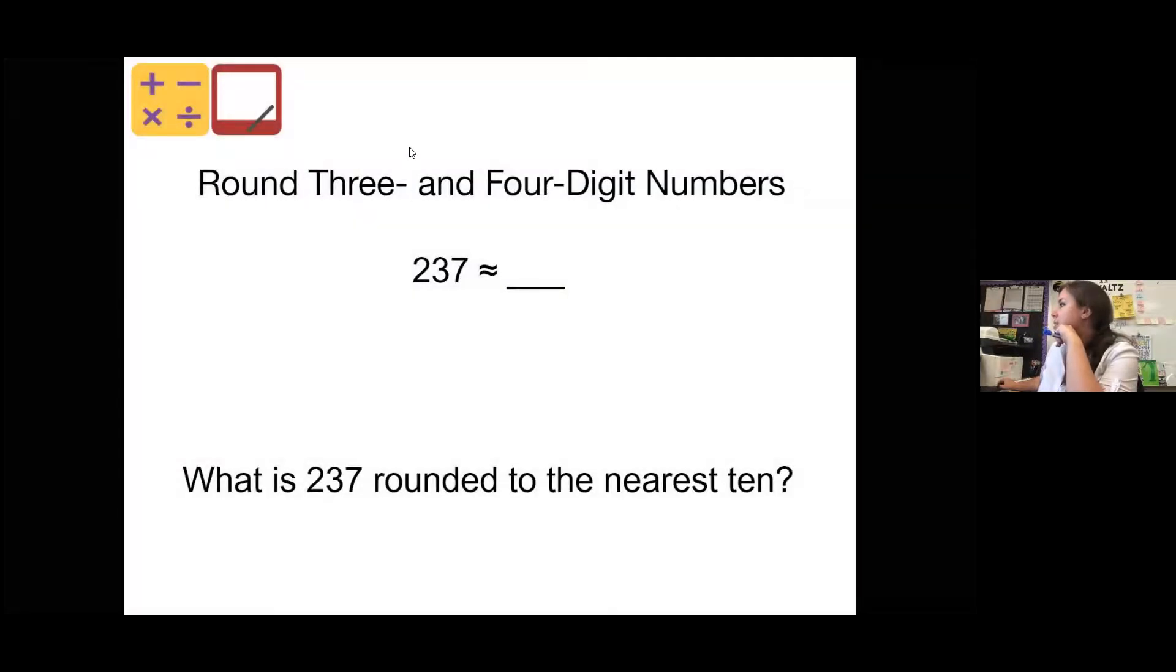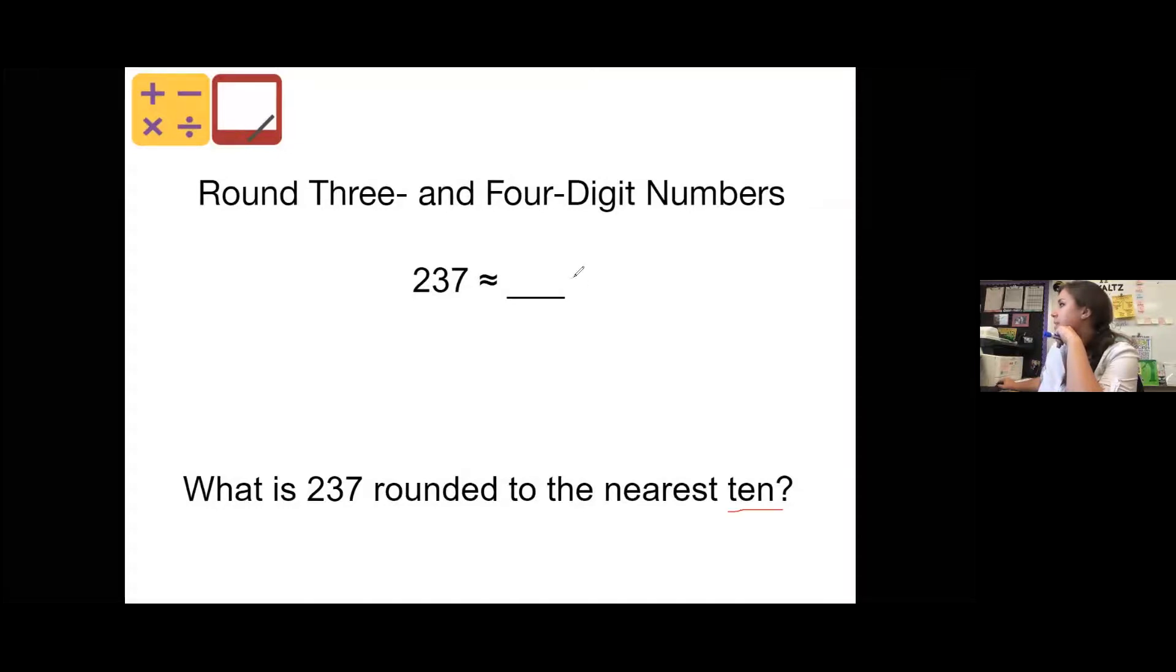Same number, but different question. This time, we're rounding to the nearest 10. When we're rounding to the nearest 10, it's just going to be one zero. So I'm going to need two digits here. 237 rounds to what? Go ahead and pause the video if you need more time. 237 rounds up to 240. Because 237 is above the halfway mark of 235.